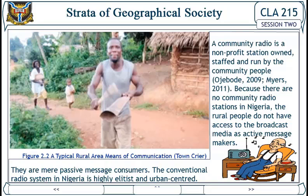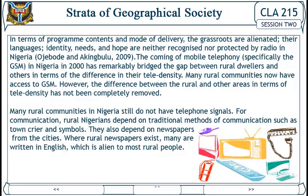Rural people are mere passive message consumers. The conventional radio system in Nigeria is highly elitist and urban-centered in terms of program content and mode of delivery. The grassroots are alienated — their languages, identities, names, and hopes are neither recognized nor protected by radio in Nigeria. The coming of mobile telephony, specifically GSM in Nigeria in 2001, has remarkably bridged the gap between rural dwellers and others in terms of tele-density.